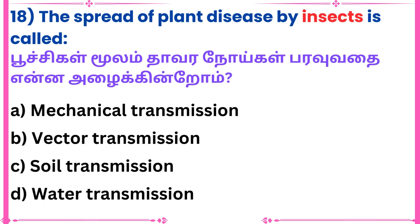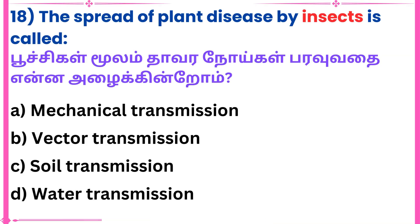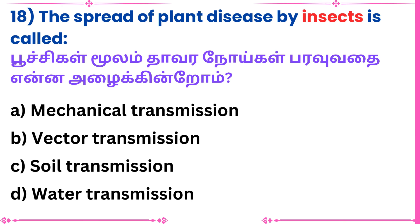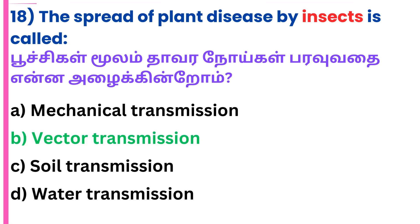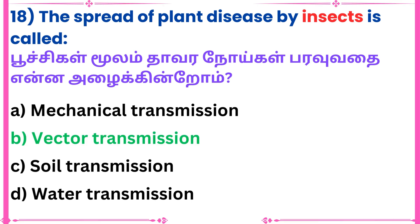Question 18: The spread of plant disease by insects is called — Answer: Vector transmission.